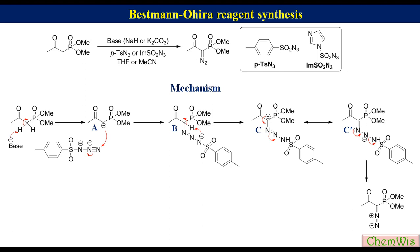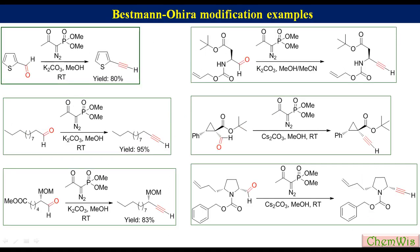These are some examples where aromatic, achiral aliphatic, and chiral aliphatic aldehydes have been transformed into their homologous terminal alkynes using the Bestmann-Ohira reagent. There are also some merits of the Bestmann-Ohira modification over the Seyferth-Gilbert conditions.